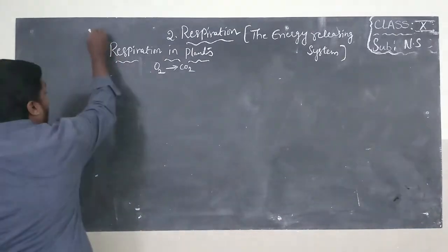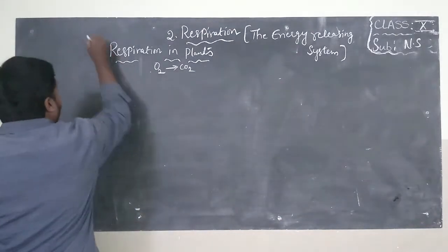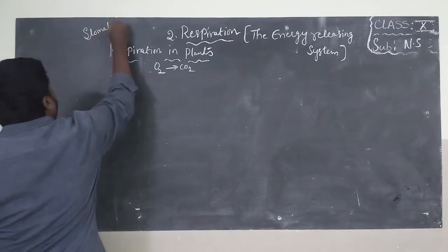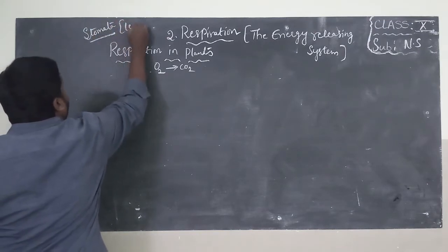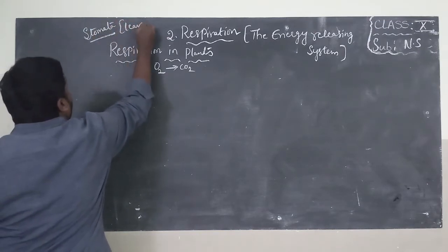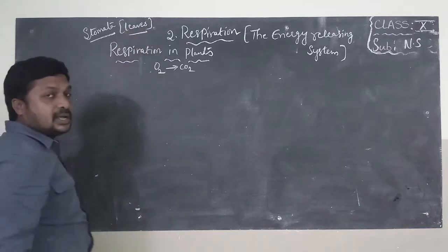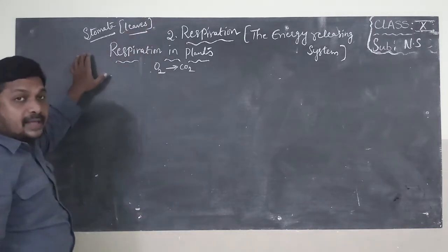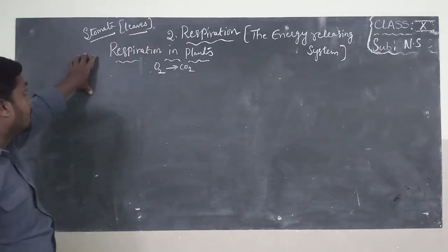As we learned in 9th class, plants have special openings called stomata. Stomata are present in leaves and are helpful for exchange of gases. So stomata are the natural openings present in the leaves which are helpful for exchange of gases.